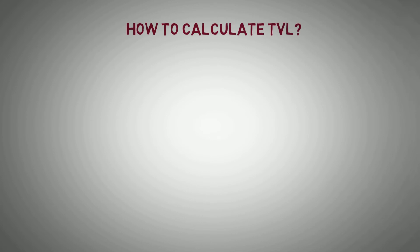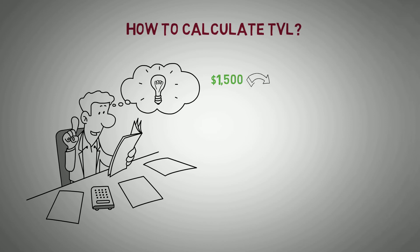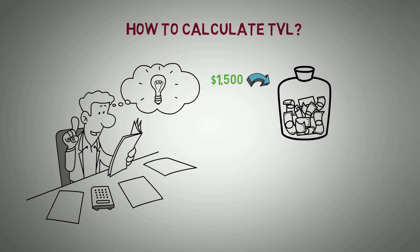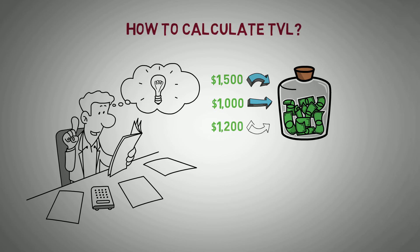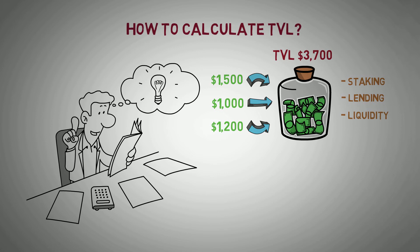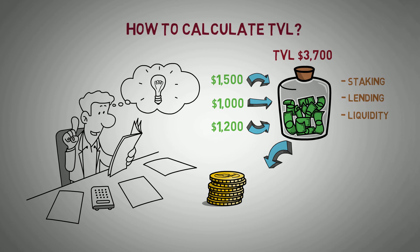How to calculate TVL. Let's say an investor deposits $1,500 worth of crypto into the money pool of a newly generated DeFi platform to validate its native blockchain transactions, staking and rewards. Next, the investor lends out an additional $1,000 in crypto for generating interest on the same platform. Later, the investor deposits $1,200 worth of tokens to provide trading liquidity in a money pool for swapping between obscure altcoins, earning them trading commissions. If all these are the only investment options the DeFi platform is getting, the TVL is calculated as the sum of all financial investments through staking, lending, and liquidity. This means the TVL is valued at $3,700.